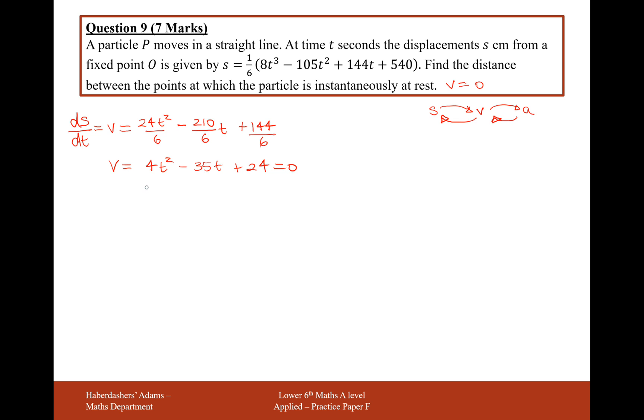Solve this quadratic equation. Let's factorize it first: (4t - 3)(t - 8) = 0. So t either equals 3/4, or t equals 8.